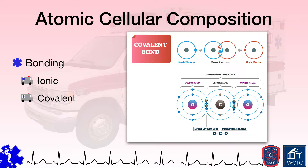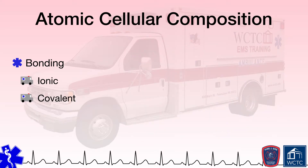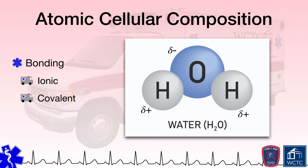Not all covalent bonds are created equally in that some atoms have stronger electromagnetic forces that pull the electrons being shared closer to that atom's nucleus and further away from the bonded atom's nucleus. This creates what is known as a polar covalent bond where the molecule will have a slightly positively charged side and a slightly negatively charged side. A water molecule is a good example of a polar covalent bond where the oxygen atoms tend to pull the electrons closer to itself and further away from the hydrogen atoms.